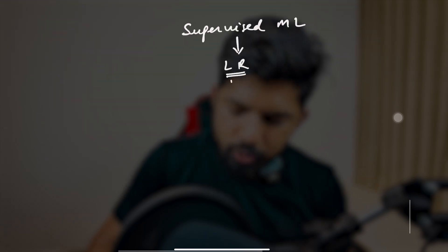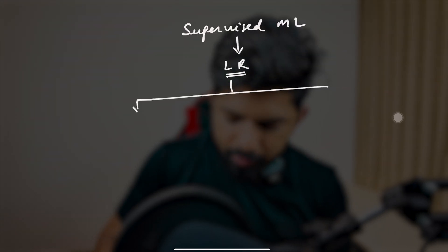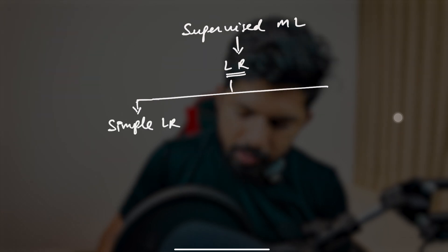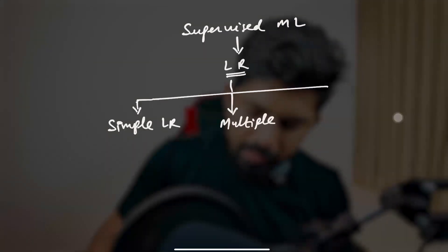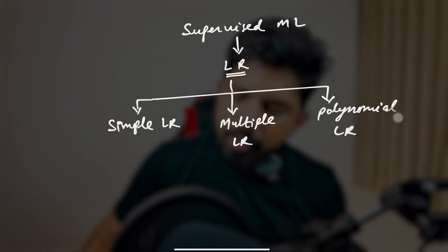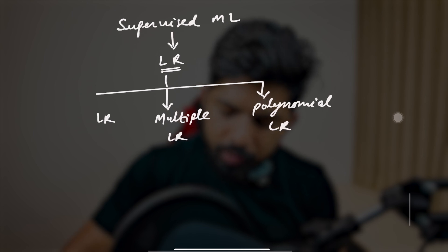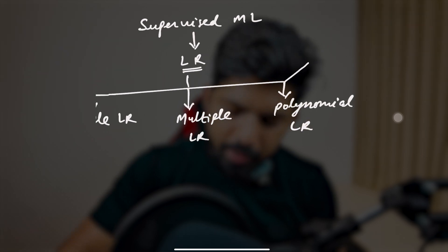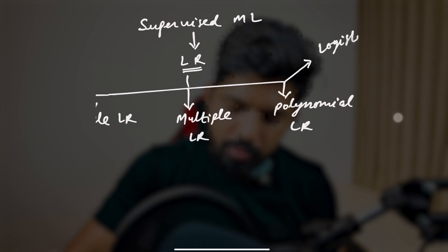Linear regression is part of supervised machine learning. Within it we have multiple parts: simple linear regression, multiple linear regression, polynomial linear regression, and also logistic regression, which we will understand later.